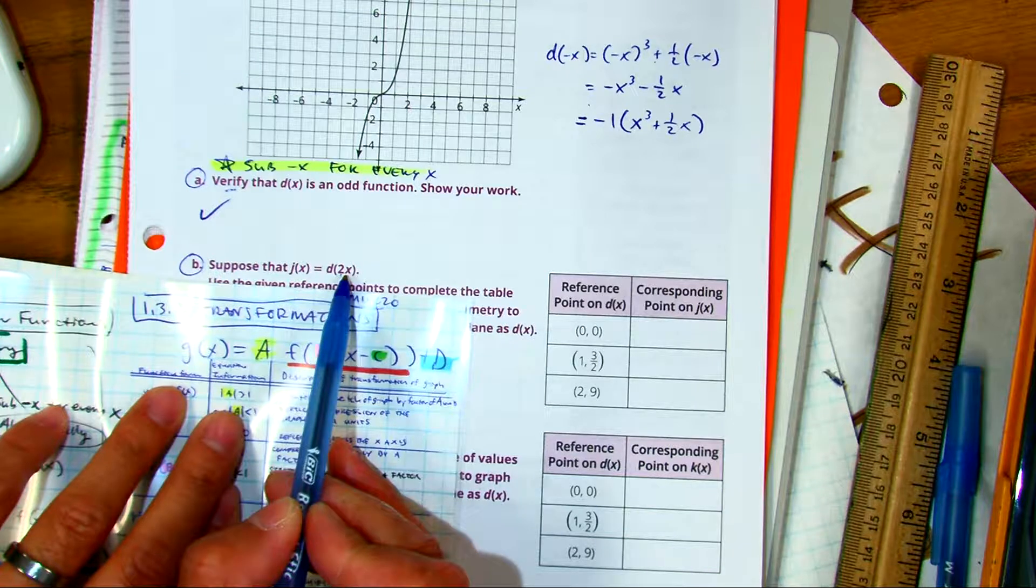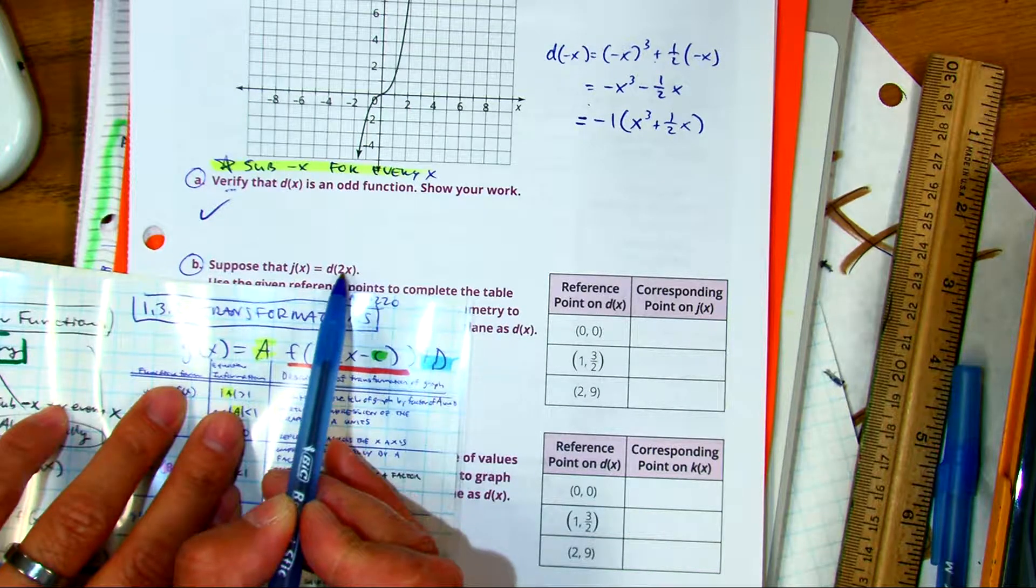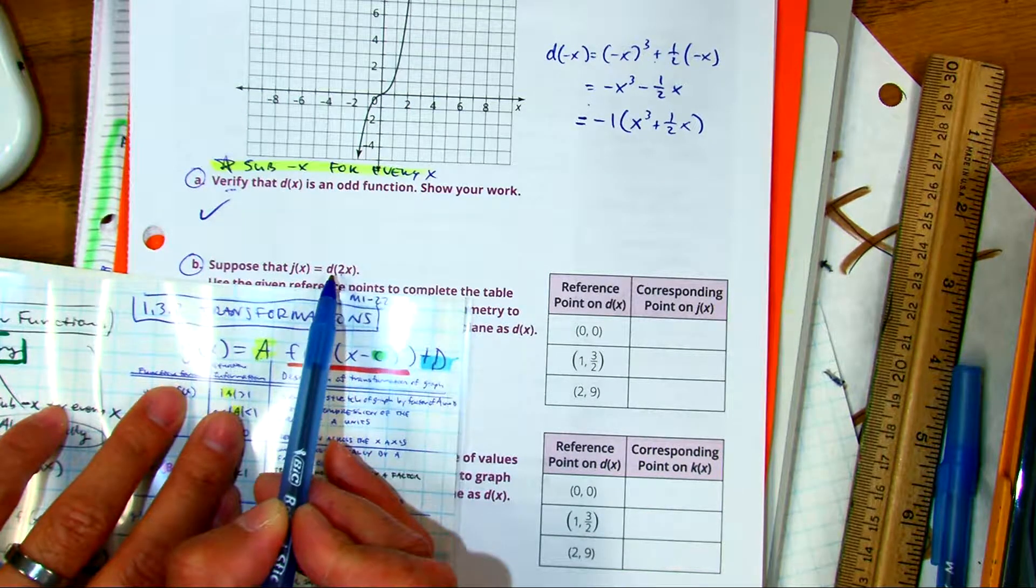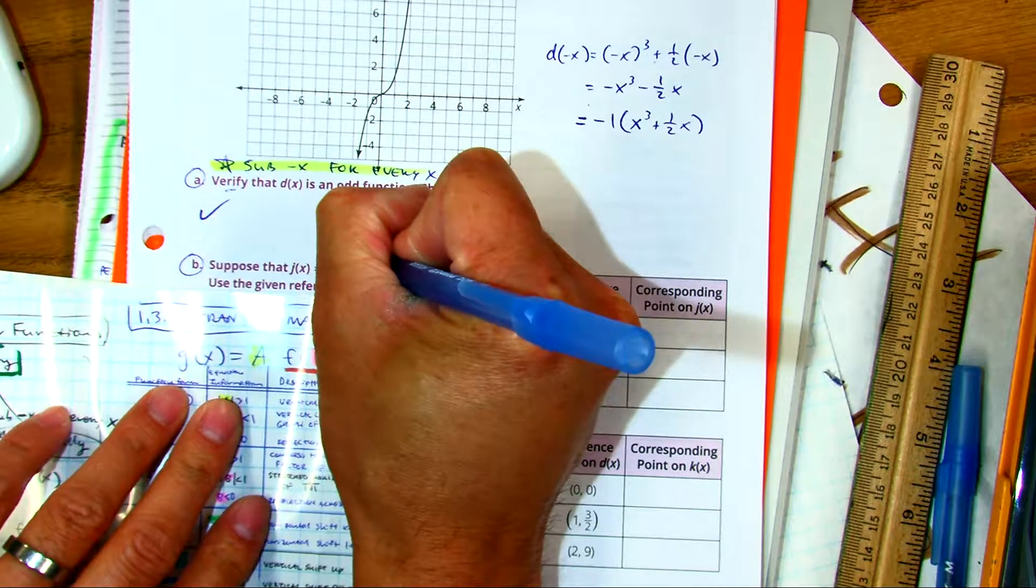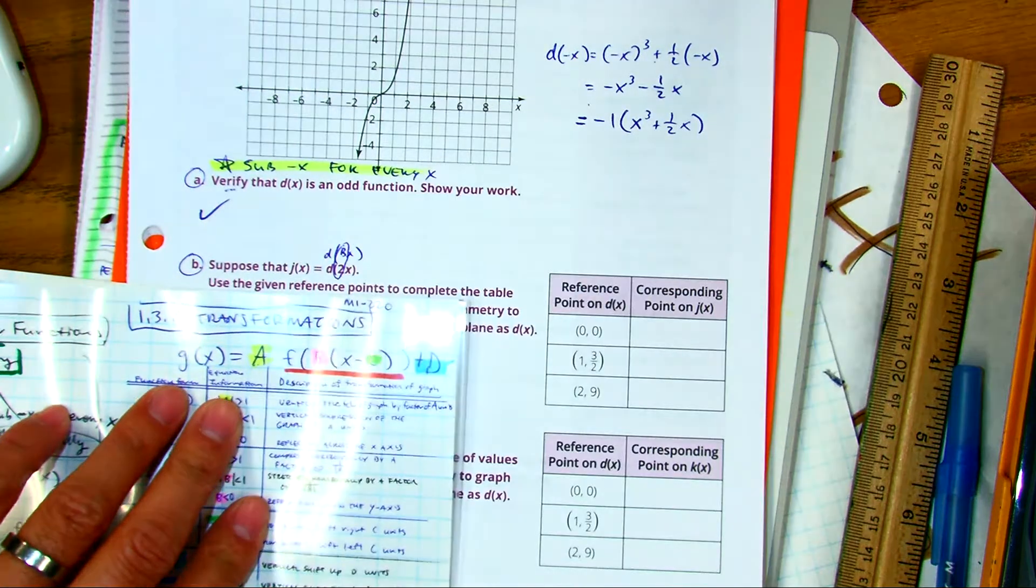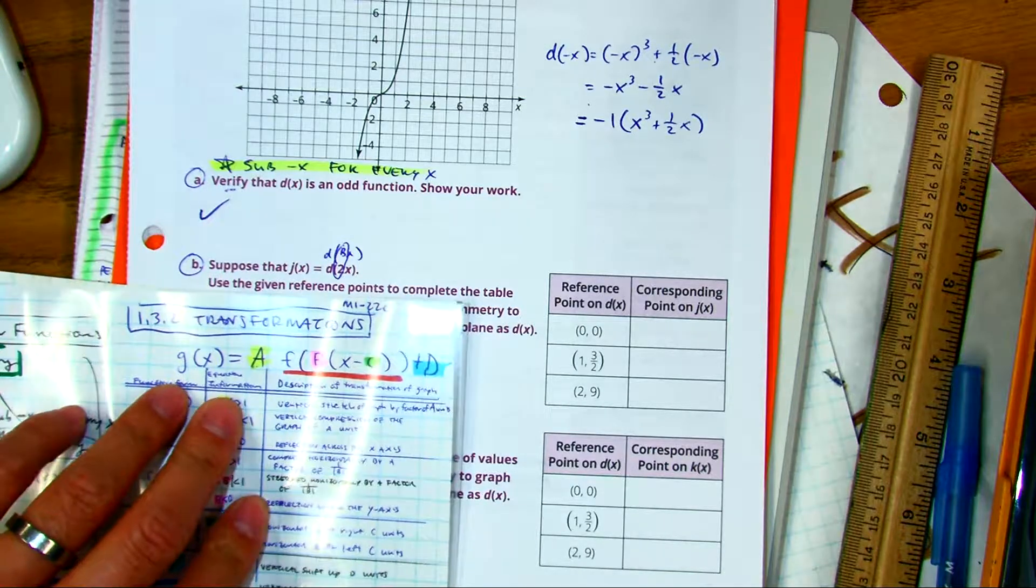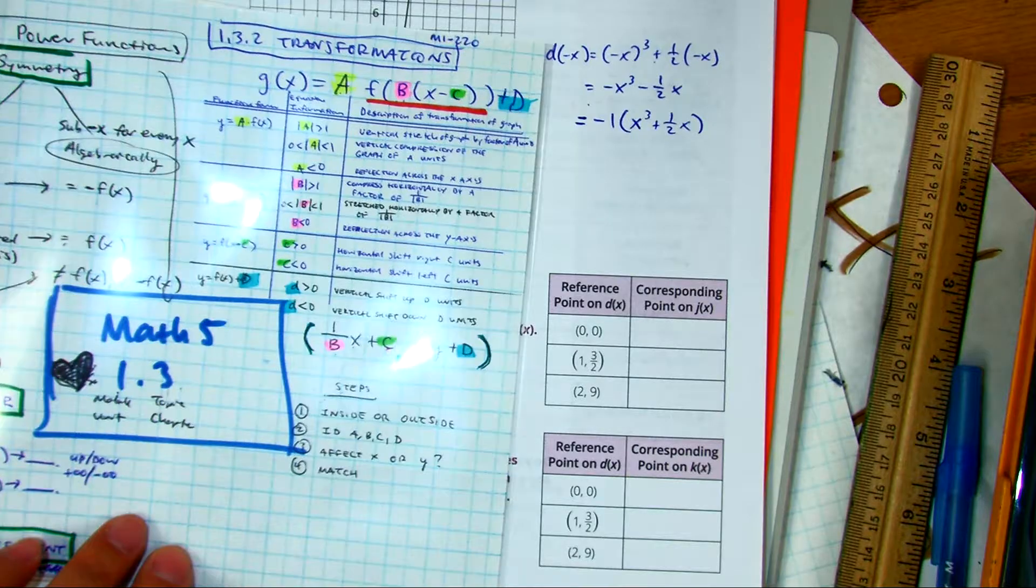Is it to the left of the X or to the right? The left. B. So B is equal to 2. Okay, Julian, question. Does the B value affect the X or the Y?